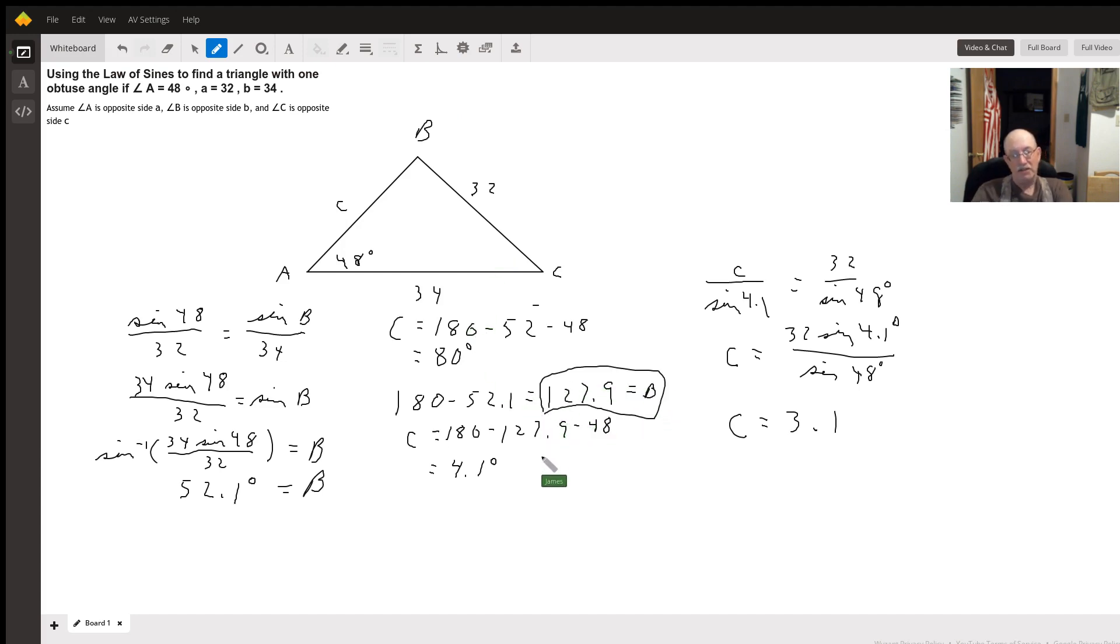So angle C must equal 4.1 degrees. Then we use law of sines again to figure out side C. We get C over sine of 4.1 degrees equals 32 over sine of 48 degrees. Solve that for C.